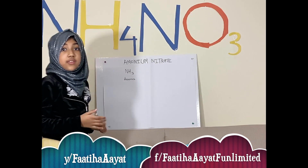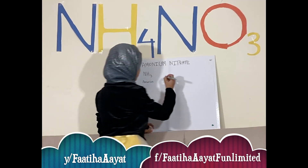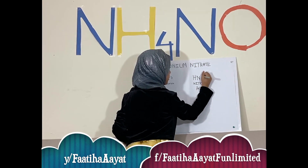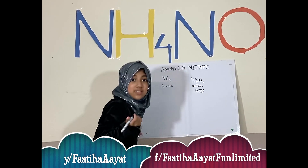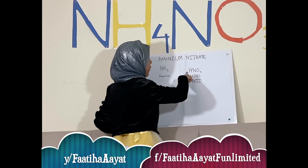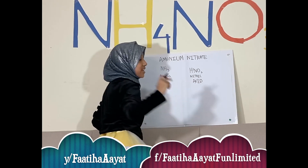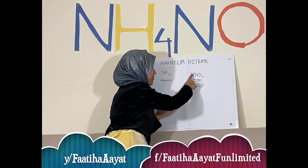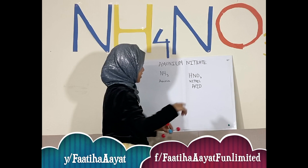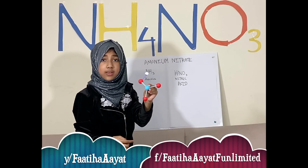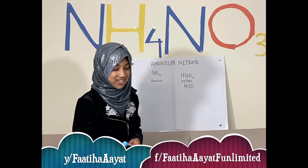Now I'm going to show you nitric acid, which is another molecule with the formula HNO3. This means that in one molecule of nitric acid, there is one atom of hydrogen, one atom of nitrogen, and three atoms of oxygen. As you can see in real life, the blue atom stands for nitrogen, the white atom stands for hydrogen, and these red atoms stand for oxygen — and there are three of them, because there are three atoms of oxygen.